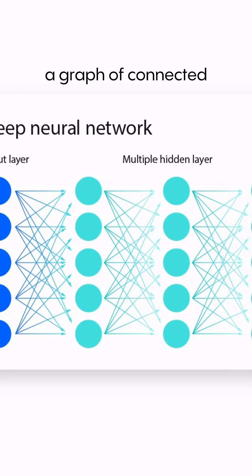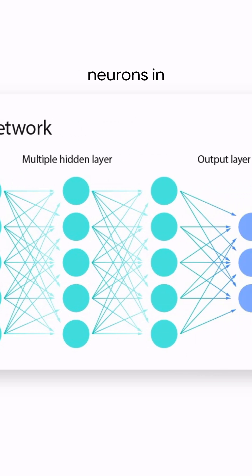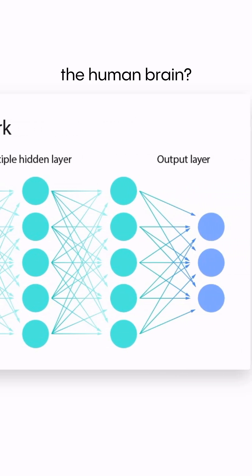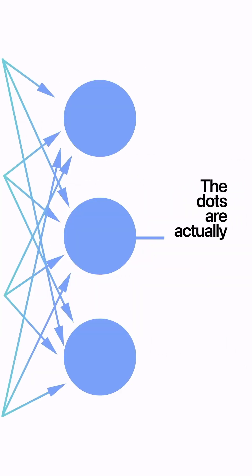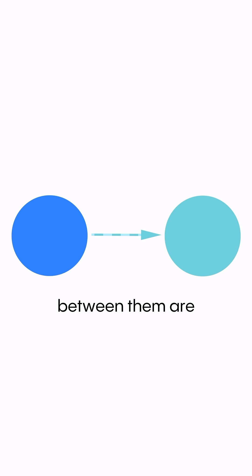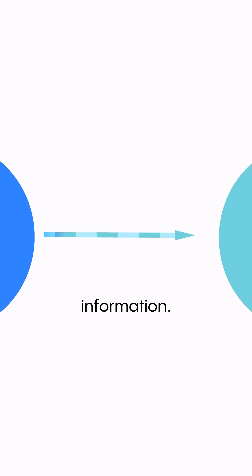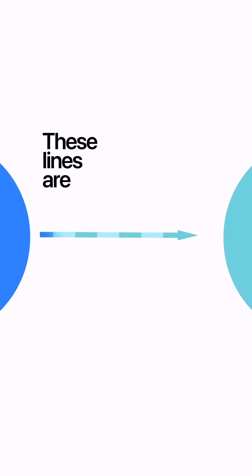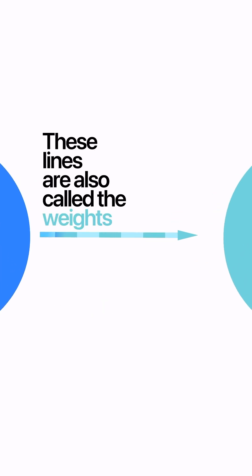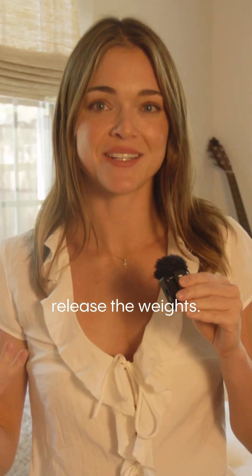See how it looks like a graph of connected neurons in the human brain? The dots are actually called neurons, or nodes, and the lines between them are connections that pass information. These lines are also called the weights of the model — you might hear that companies release the weights.